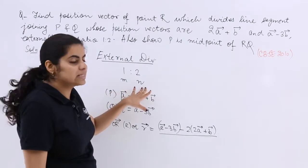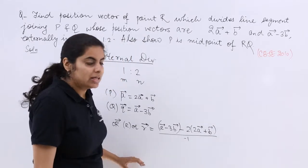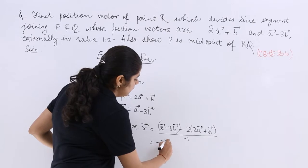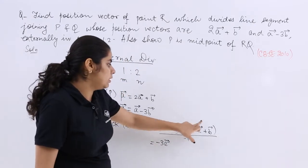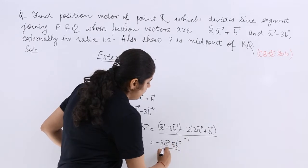Then upon, upon I have M minus N because there is a subtraction case, so minus 1. Now let me solve it. This is A, this is minus 4A. So minus 3A vector minus 3B minus 2B which is minus 5B vector upon minus 1.